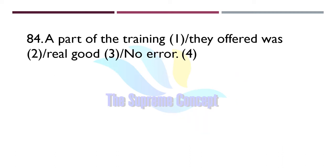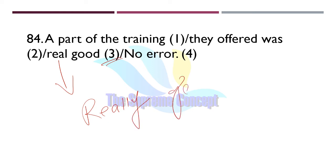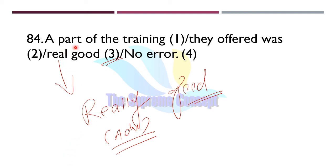Question number 84: 'As part of the training, the offer was real good.' The error lies in part number three — instead of 'real', we will use 'really'. 'Really' is an adverb used for emphasizing an adjective. The corrected sentence reads: 'As part of the training, the effort was really good.'